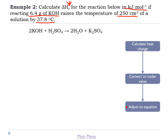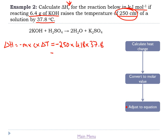Heat change first: ΔH = −mcΔT = −250 × 4.18 × 37.8 = −39,501 joules. Converting to kilojoules to four significant figures gives −39.5 kJ.